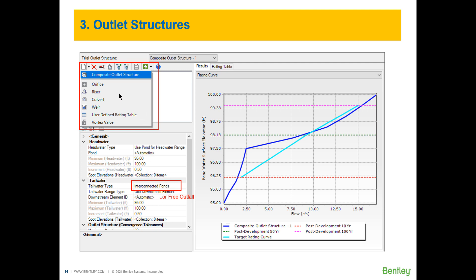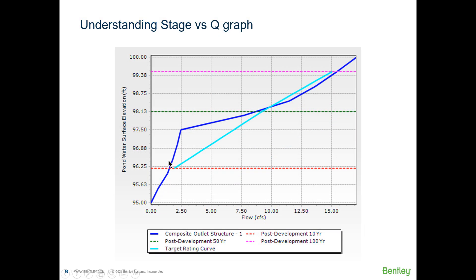We're going to go over each element type shortly but I'd like to explain the graph here on the right. The dark blue line shows you the expected flow through the entire or the composite outlet structure at different levels in the pond. So for example you can see that the bottom of this pond is at 95 feet and the top at 100 and when the water elevation in the pond is 97.5 feet the expected flow through the composite outlet structure is 2.5 CFS and when the pond is full at 100 the expected flow is 17.5 CFS. Now a nice thing about this is that as you modify the elements in your outlet structure this dark blue line will shift and you want it to be as close as possible to the cyan line. This cyan line is your target rating curve meaning that you should aim at designing an outlet structure which closely follows that curve.